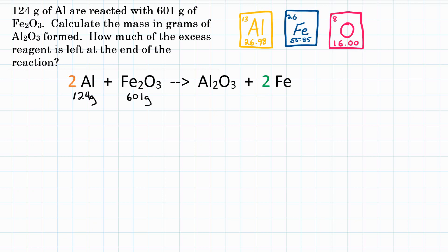We're going to start with 124 grams of Al. We're starting with mass and wanting to end up with mass — the problem asks for grams of Al₂O₃ formed. Because we're going mass of a reactant to mass of product, this is three steps, three conversion factors.